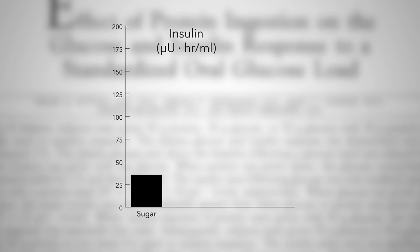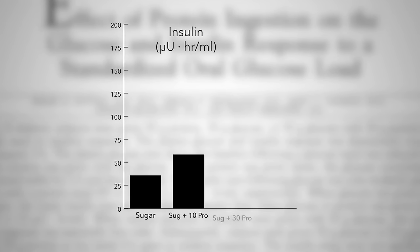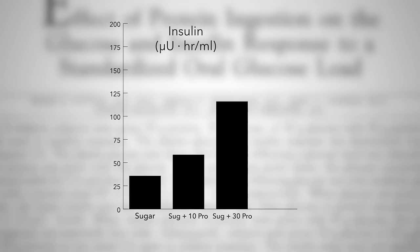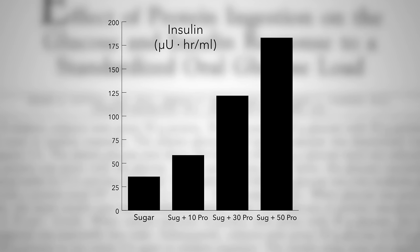And the more meat you add, the worse it gets. Just adding a little meat to carbs doesn't seem to do much, but once you get up to like a third of a chicken breast's worth, you can elicit a significantly increased surge of insulin.